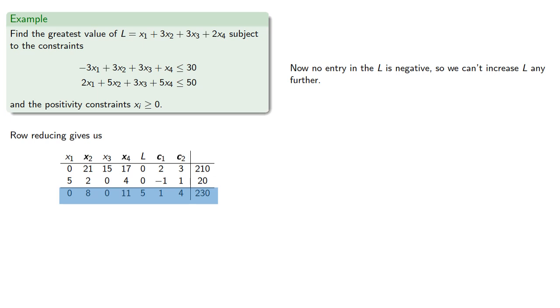And now, no entry in the L row is negative, so we can't increase L any further. Setting our free variable to 0 makes our L row. And so we have our solution.